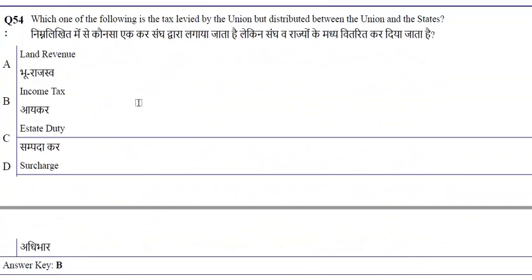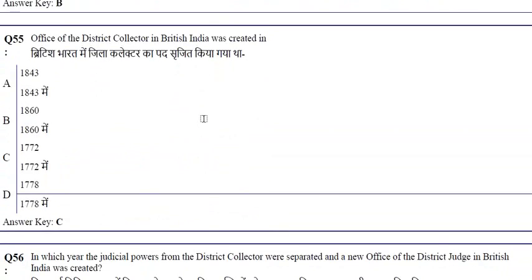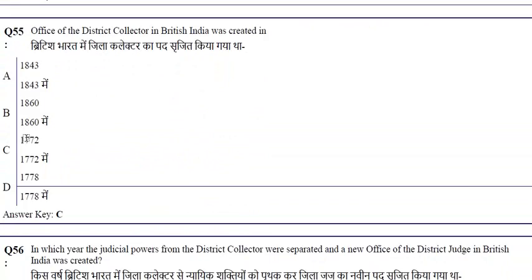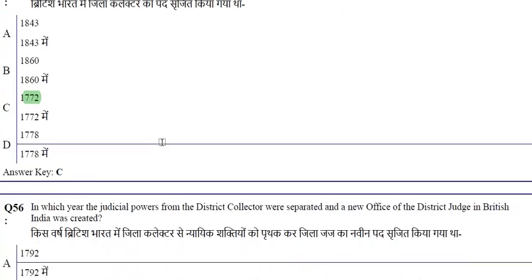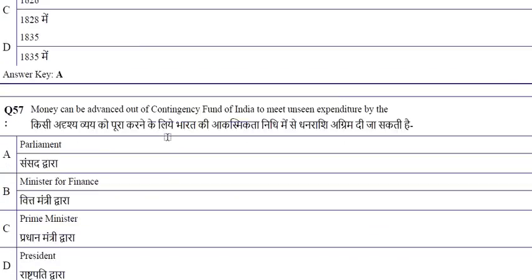Income tax is the tax levied by the union but distributed between the union and states. The Office of the District Collector in British India was created in 1772. In 1792, judicial powers from the district collector were separated and the new office of District Judge was created.